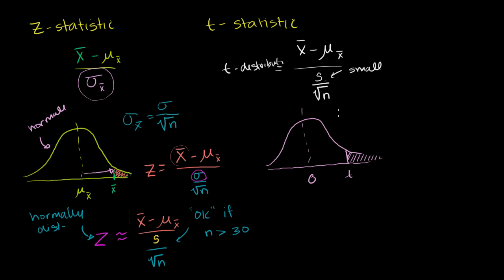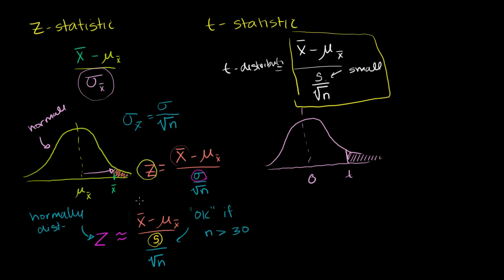A very easy rule of thumb: calculate this quantity either way. If your sample size is more than 30, your sample standard deviation is a good approximator for your population standard deviation, so the statistic is approximately normally distributed and you use a z-table. If your sample size is small, this quantity has a t-distribution and you use a t-table to find the probability of getting a t-value at least this extreme. Hopefully that helped clarify when to use a z-statistic or a t-statistic.